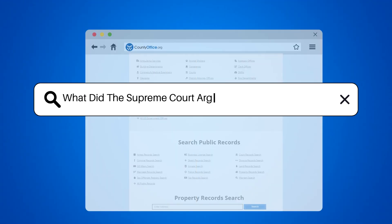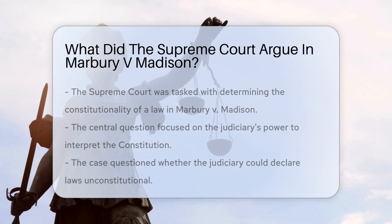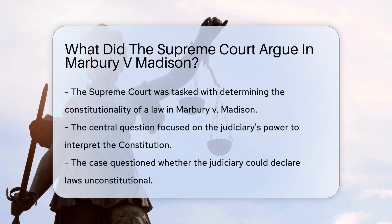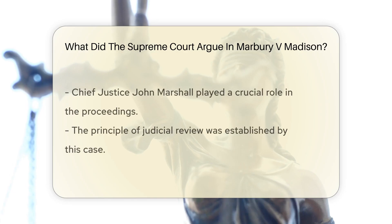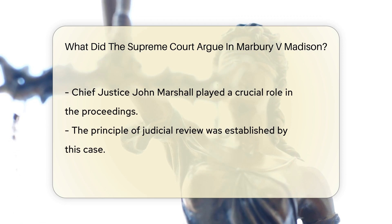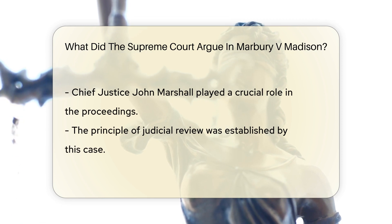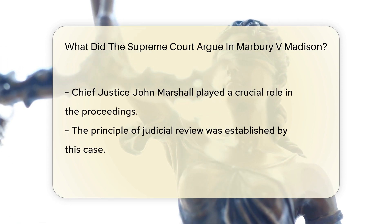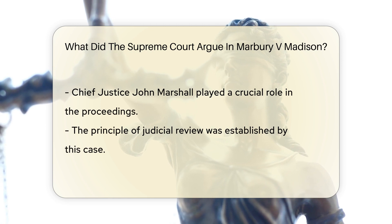What did the Supreme Court argue in Marbury v. Madison? In the case of Marbury v. Madison, the Supreme Court was tasked with determining the constitutionality of a law. The central question revolved around the power of the judiciary to interpret the Constitution and declare laws unconstitutional. Chief Justice John Marshall played a pivotal role in establishing the principle of judicial review.